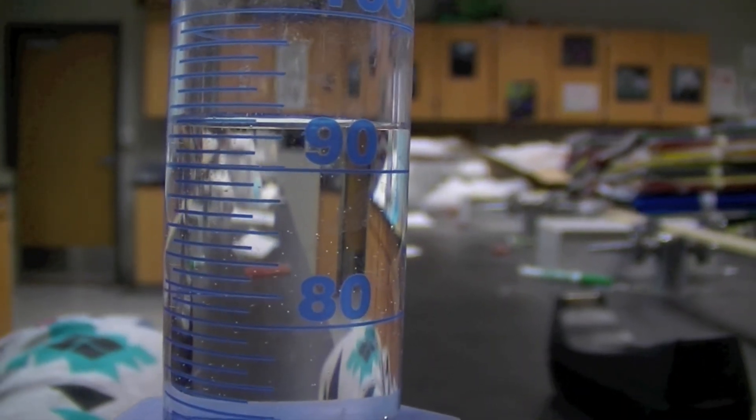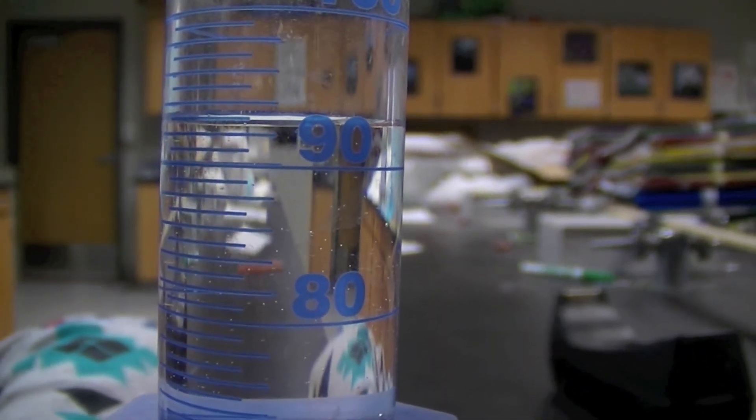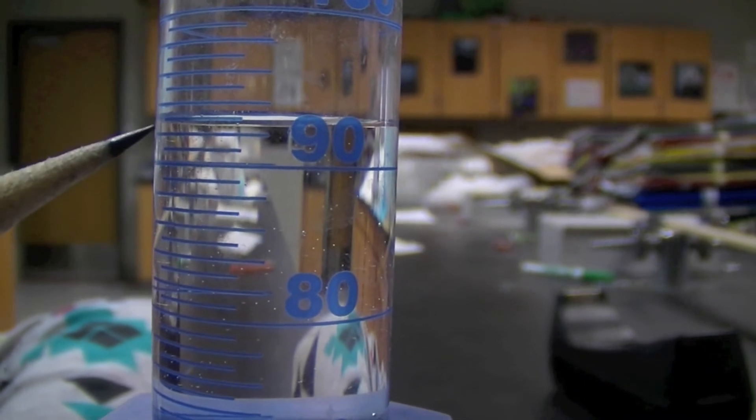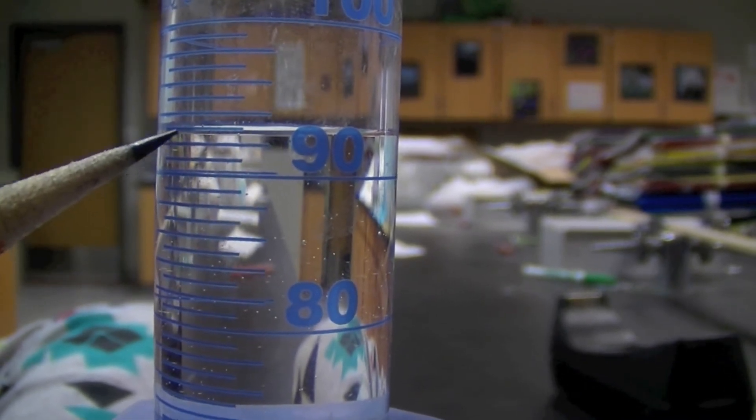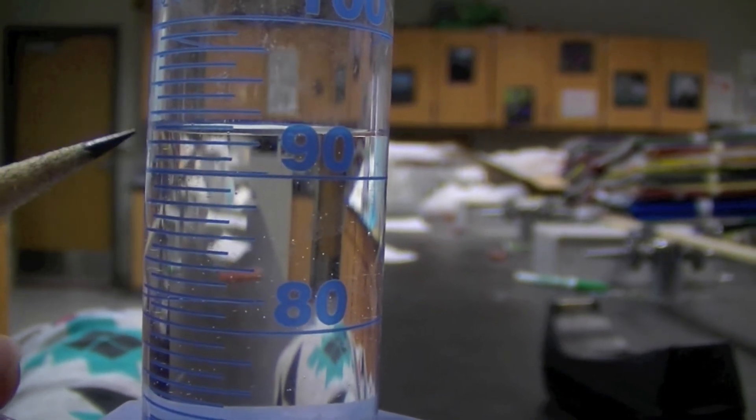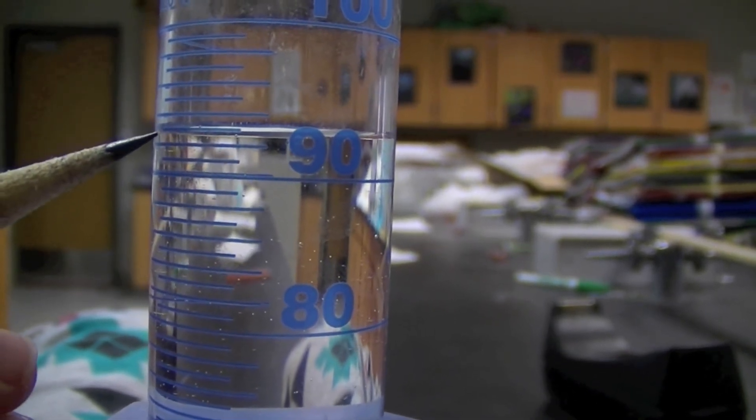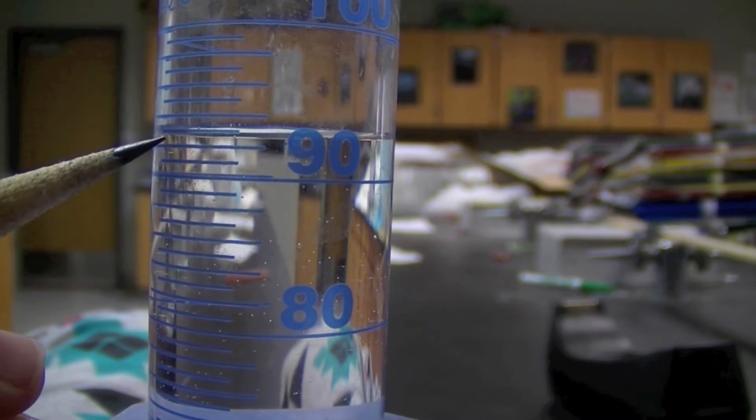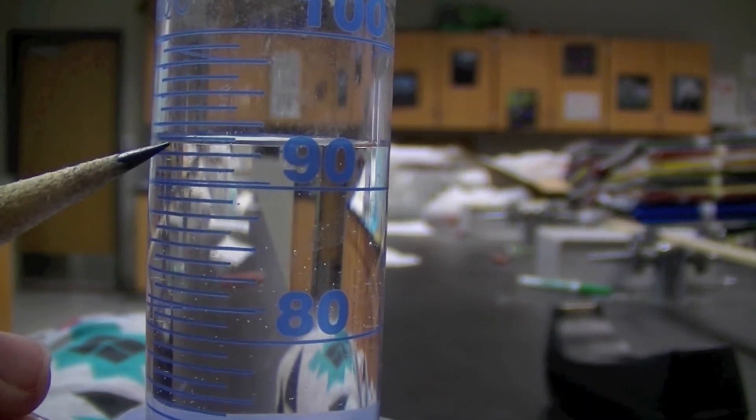So when we measure using a graduated cylinder, we have to look for the bottom of the meniscus. Water isn't flat, there's a small bubble to it, it bubbles down. So we have to find that bubble where it bubbles down on the bottom of the meniscus. Here, it's just below 93 milliliters.